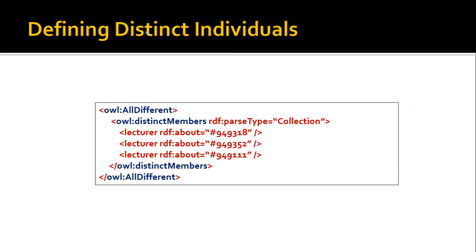When you have many individuals and want to declare all of them as mutually distinct, it is not practical to do this pairwise. Instead, use the owl:AllDifferent construct — whatever IDs or URIs you include inside it are treated as distinct individuals, using the distinctMembers construct.